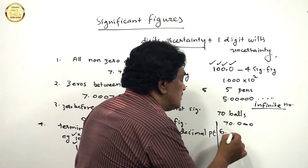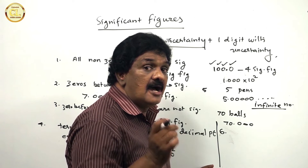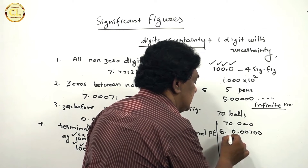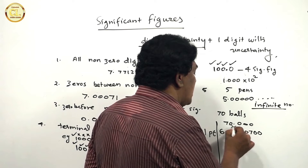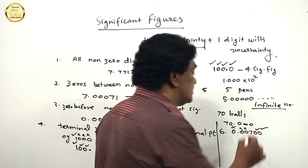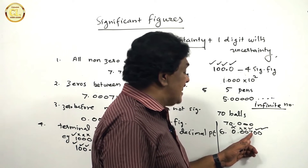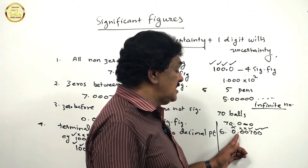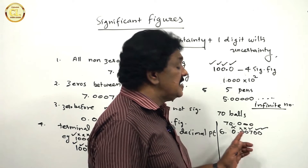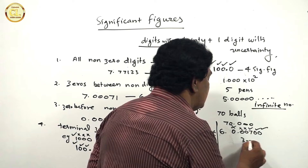Sixth point: zeros coming after a non-zero digit which comes after a decimal point are significant. For example, 0.00700. The leading zeros are not significant because they come before a non-zero digit. But these two trailing zeros become significant, as does the 7, because these zeros come after a non-zero digit that itself comes after a decimal point. So there are three significant figures.